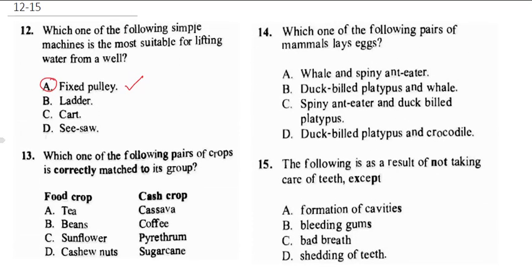Question 13 asks: which one of the following pairs of crops is correctly matched to each group? Now tea is not a food crop, so it's not matched correctly. Cassava is actually a food crop, while coffee is a cash crop. So the correct answer here is B — it's correctly matched.